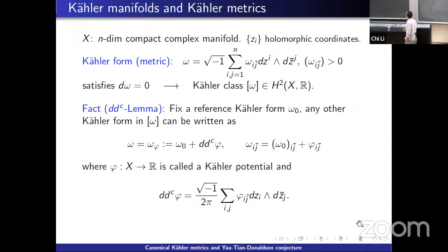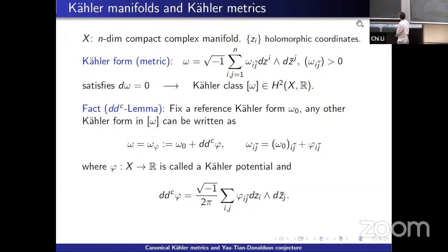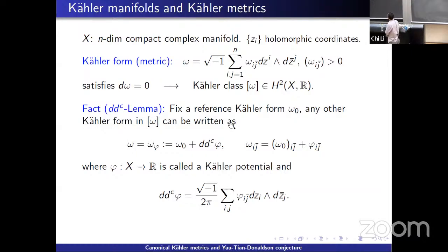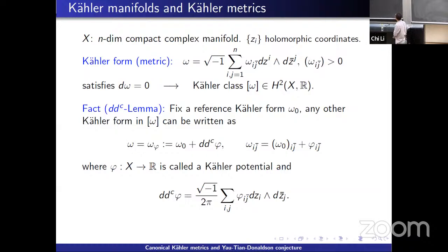Let's start by recording some concepts. Assume X is an n-dimensional compact complex manifold. By a Kähler form we mean a (1,1)-form which is closed. Under holomorphic coordinates, it has this form where the omega_{i\bar{j}} matrix is positive definite, giving rise to a Kähler metric. Because the Kähler form is closed, it defines a cohomology class called the Kähler class in the second cohomology group. A basic fact we need is the DDC lemma, which says that if we fix a reference Kähler form omega_0, then any other Kähler form in the same Kähler class can be written as omega_0 + DDC phi, where phi is called the Kähler potential.